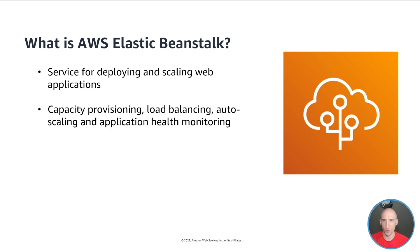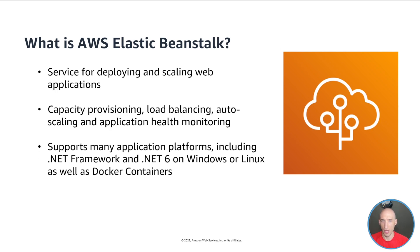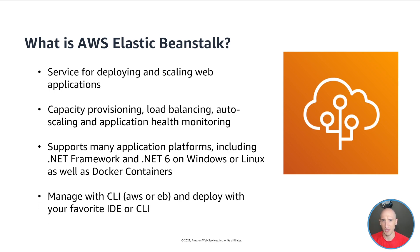Elastic Beanstalk supports applications developed in Go, Java, .NET, Node.js, PHP, Python, and Ruby. When you deploy your application, Elastic Beanstalk builds a selected supported platform version and provisions one or more AWS resources, such as Amazon EC2 instances, to run your application. You can interact with Elastic Beanstalk by using the Elastic Beanstalk console, the AWS CLI, or EB, which is a high-level CLI designed specifically for Elastic Beanstalk.